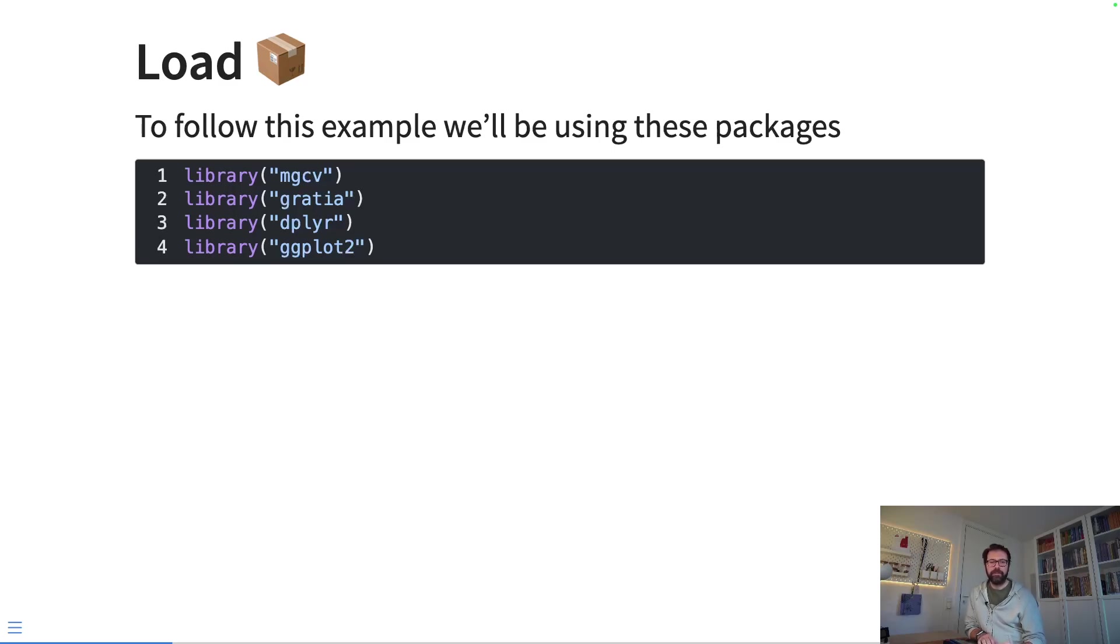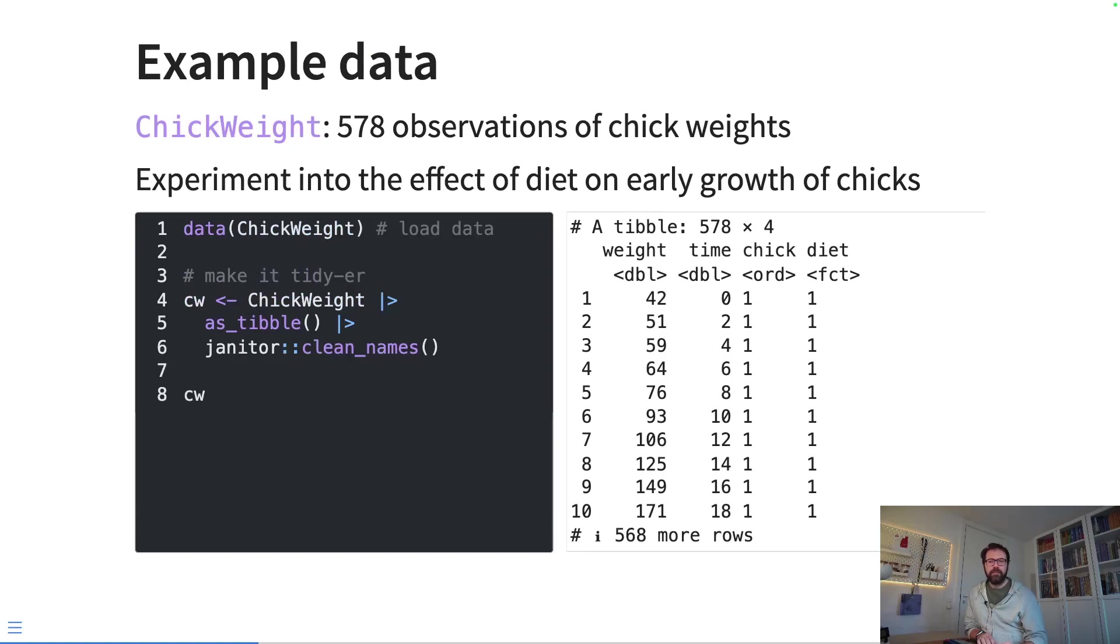In this example data that comes with the R software, we're going to be looking at this chick weight dataset that contains 578 observations of chick weights. It was a dataset from an experiment into the effect of diet on early growth of chicks. So we load the chick weight data, and then it's not very tidy.